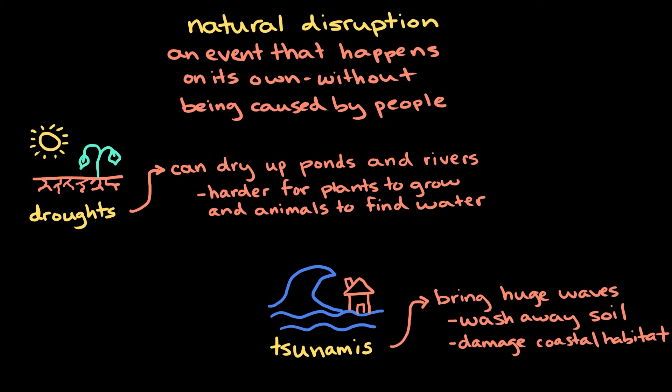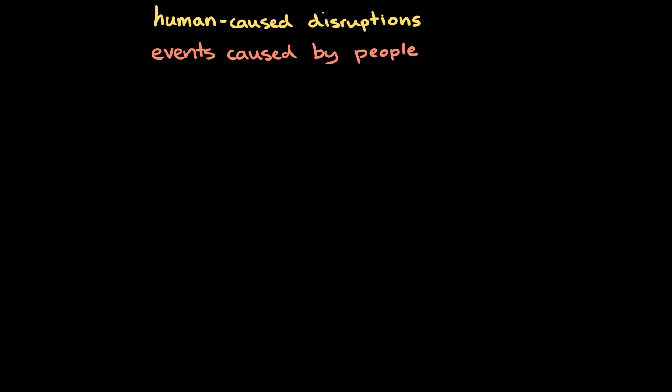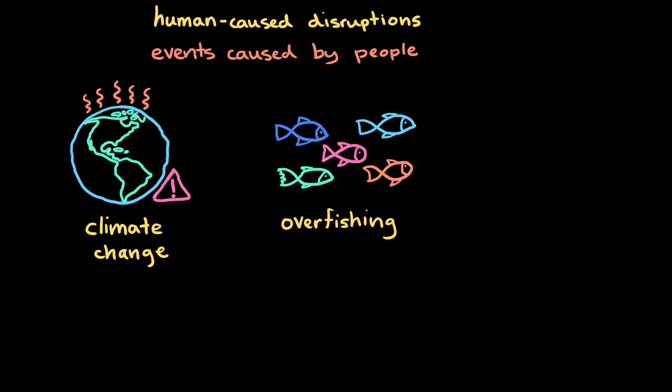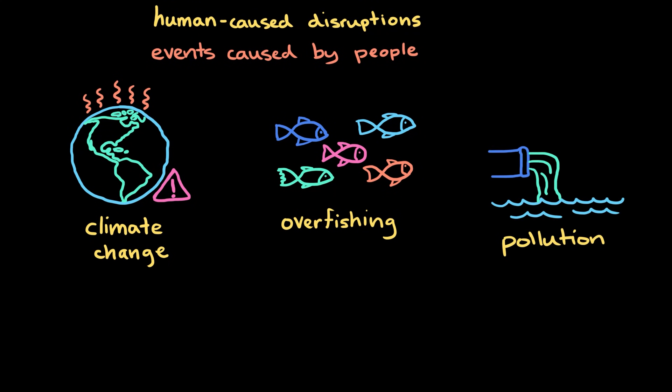Some disruptions, though, are caused by people, which we call human-caused disruptions. Examples of these include climate change, overfishing, and pollution.